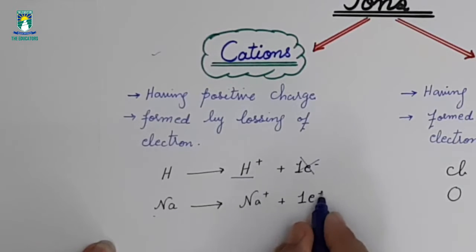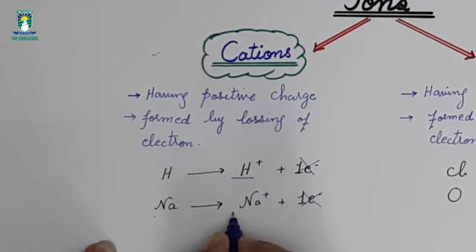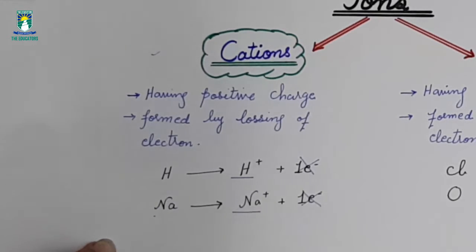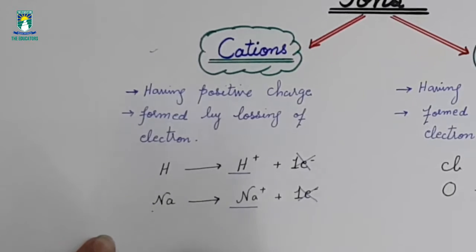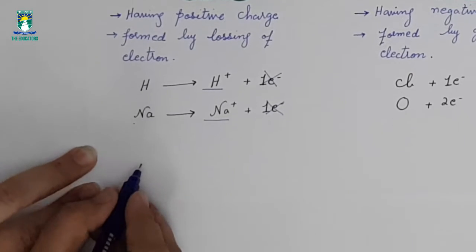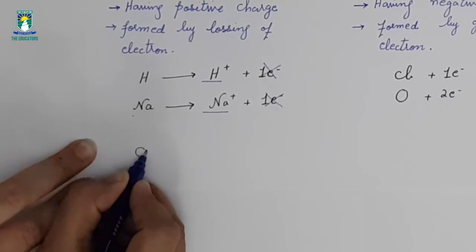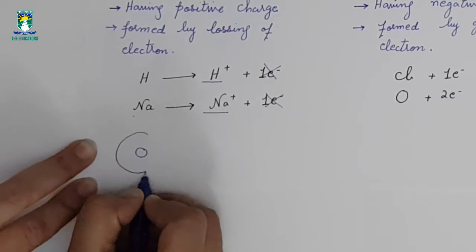Sodium also loses one electron and becomes sodium ion, which is known as cation. They remove the electron from their outermost shell. Hydrogen has its nucleus and one electron in its outer shell.